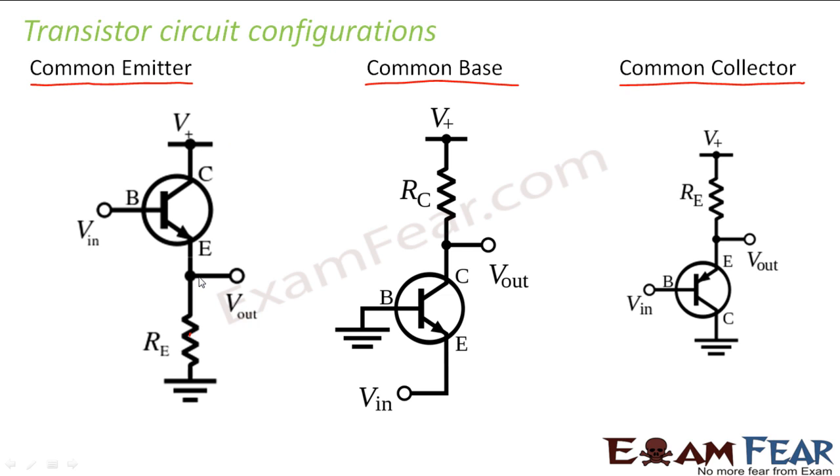So emitter acts as a reference between the base and the collector. So if I connect this complete circuit here, I can see that base emitter comprises of the input circuit and emitter collector forms the output circuit.